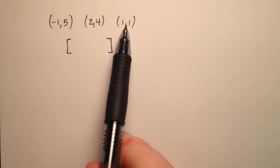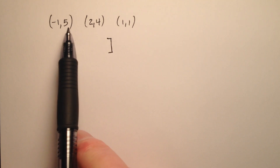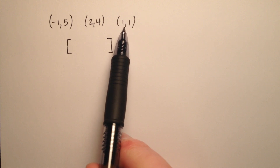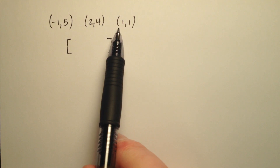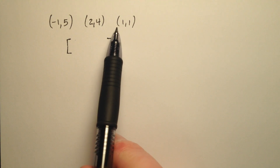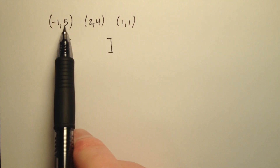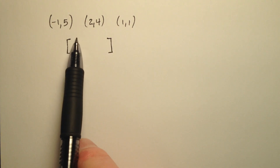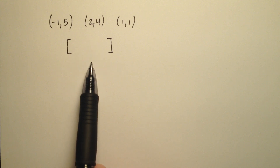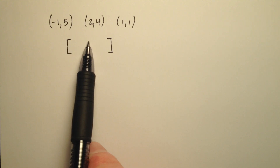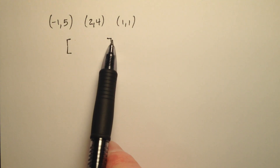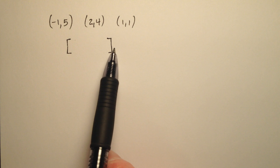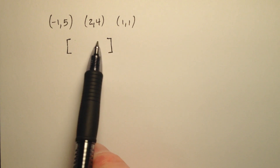Here I have three ordered pairs that represent vertices of a triangle in the coordinate plane. The first thing I want to do is write the vertex matrix for this triangle. Since I have three ordered pairs, my matrix will have three columns, where the first row contains all the x-coordinates and the second row contains all the y-coordinates.